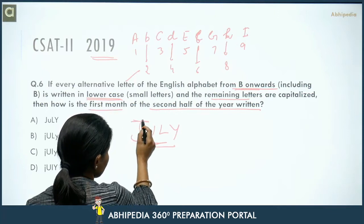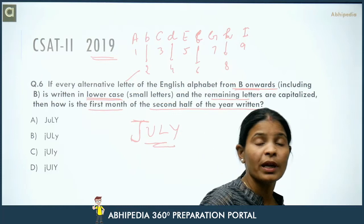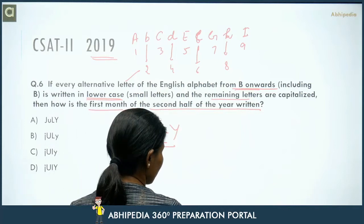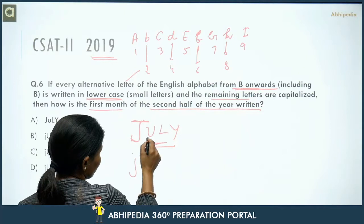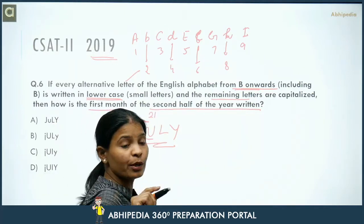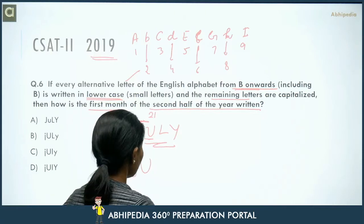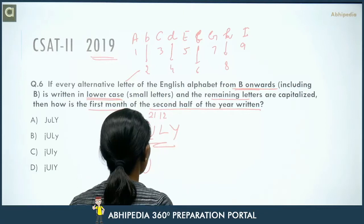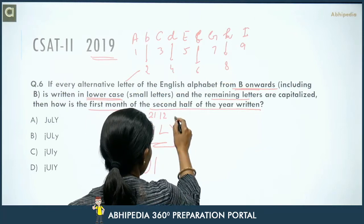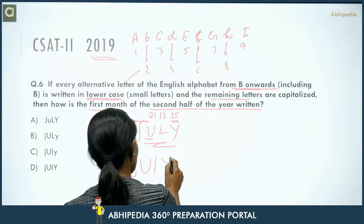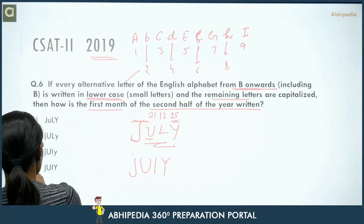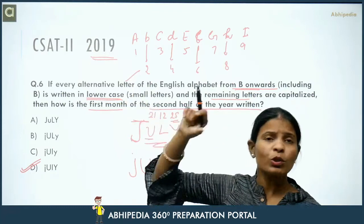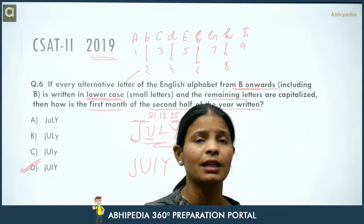So JULY is coded as jUlY, which matches option D. For such questions, first understand the condition given, then apply it to find the answer.